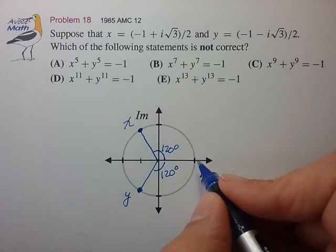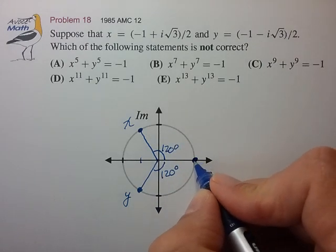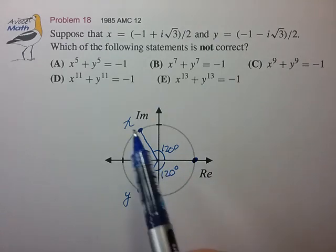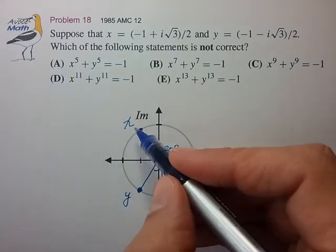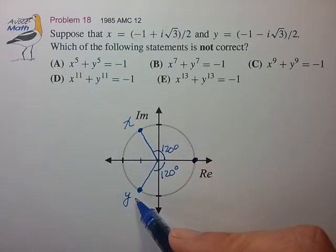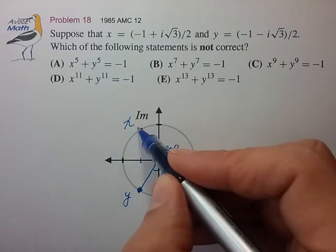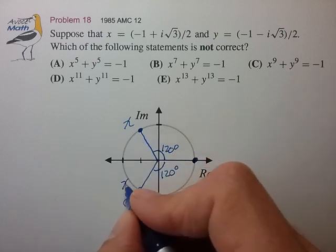Either these two spots, or possibly +1 on the real axis. So let's try to follow these through. So for choice A, we have to track x to the fifth. So x to the first is here. x to the second. x to the third. x to the fourth. x to the fifth. Lands us here.